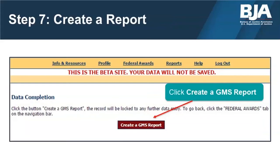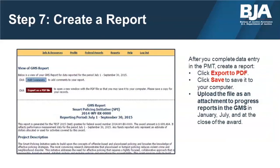Congratulations! You have successfully completed your data entry and are ready to generate your report. After you select the Mark Data as Complete button and save your report, you will be asked if you want to create a GMS report. After you select Create a GMS Report, a new window will appear with your report. Select the red Export as PDF button to generate a copy as a PDF, which will open in a new window. Save the report to your computer for record keeping, or if it is during the April to June or October to December reporting periods, save it to upload as an attachment to your progress reports in GMS by July 30th and January 30th of each calendar year.